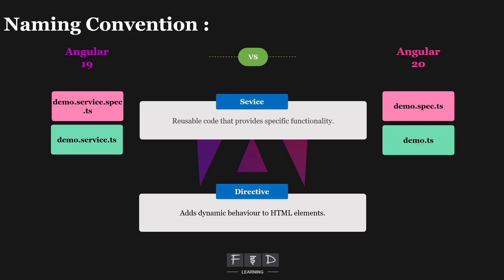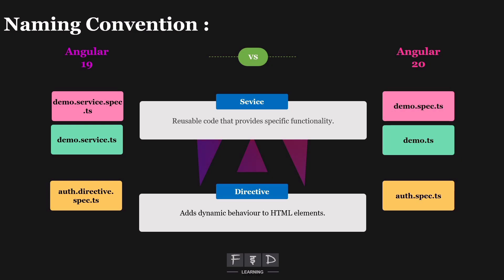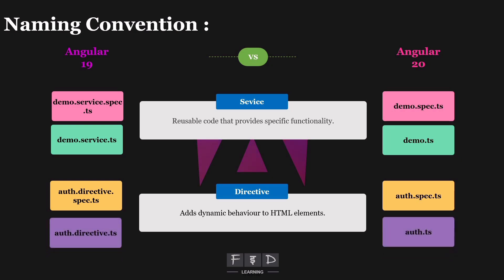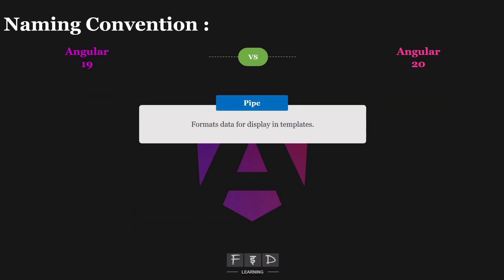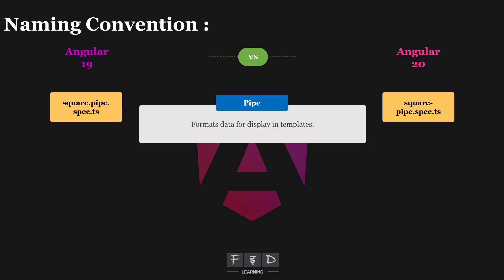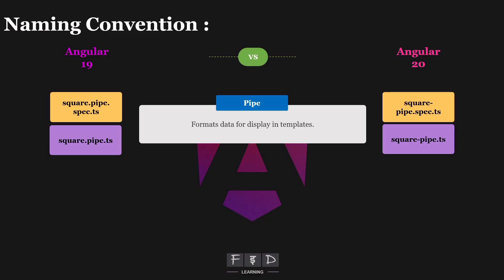The same thing happens with directives. If we create a directive named auth, then auth.directive.spec.ts becomes auth.spec.ts and auth.directive.ts becomes auth.ts, dropping the directive part. For pipes, if we create a new pipe called square in Angular 20, we get two files with a hyphen pipe prefix instead of dot: square-pipe.spec.ts and square-pipe.ts.